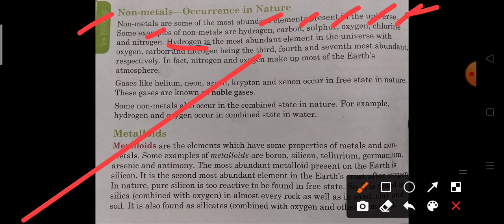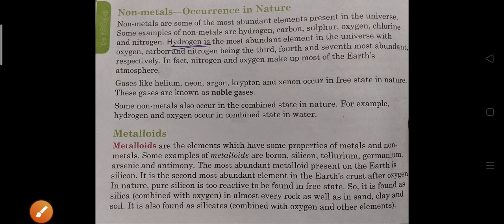Hydrogen is the most abundant element in the universe with oxygen, carbon and nitrogen being the third, fourth and seventh most abundant respectively. In fact, nitrogen and oxygen make up most of the earth's atmosphere.